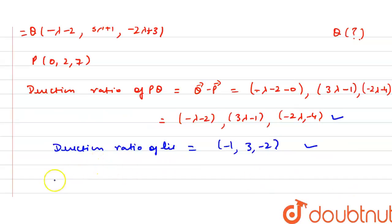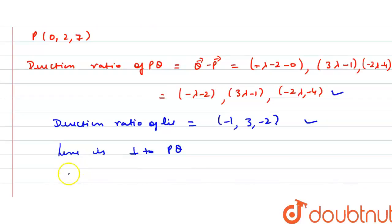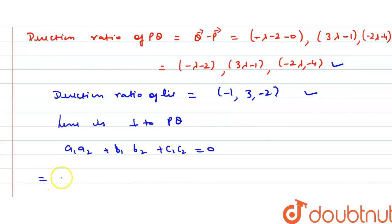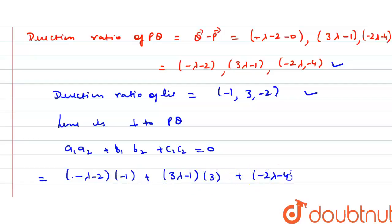Since the line is perpendicular to PQ, we apply the dot product condition: a1·a2 + b1·b2 + c1·c2 = 0. So: (minus lambda minus 2) times minus 1, plus (3 lambda minus 1) times 3, plus (minus 2 lambda minus 4) times minus 2 equals 0.